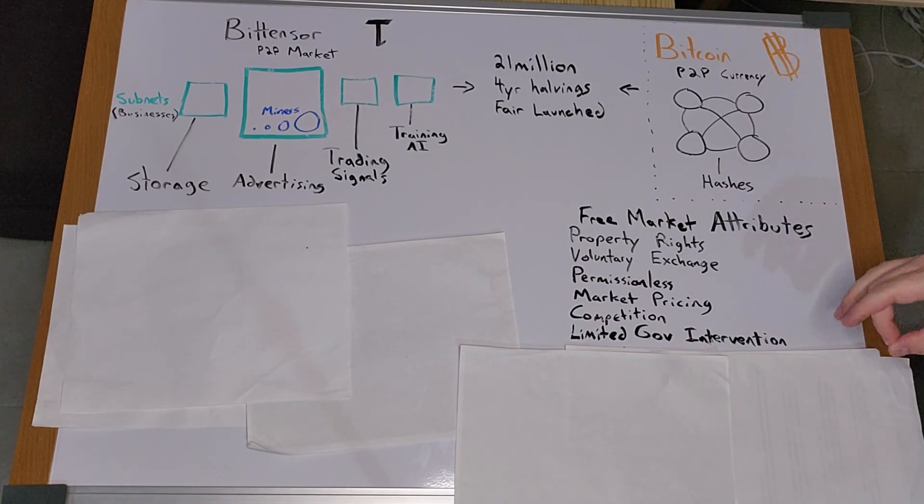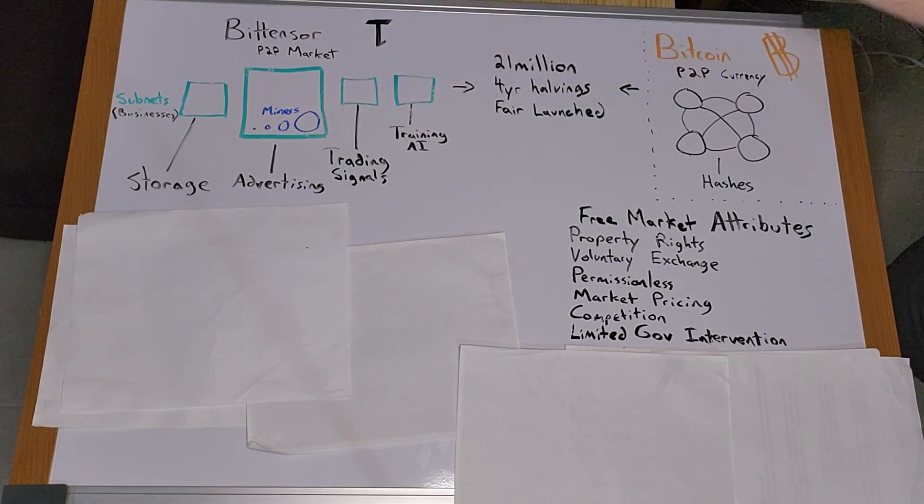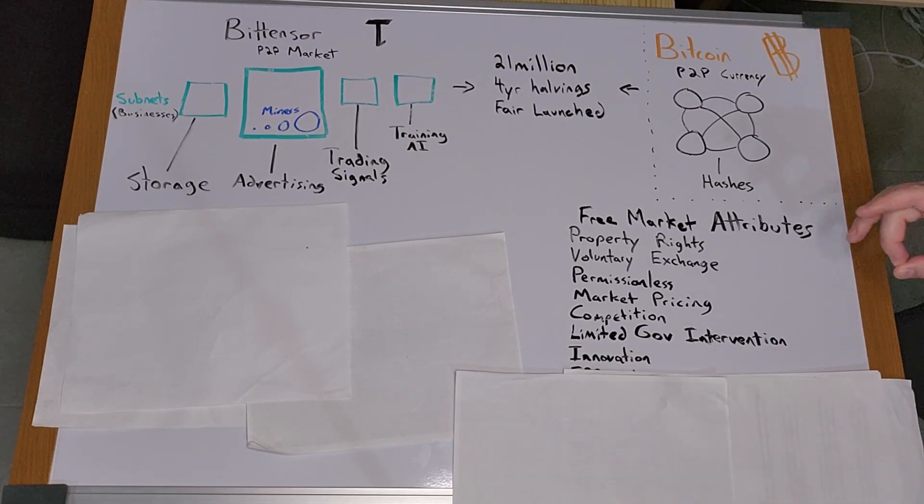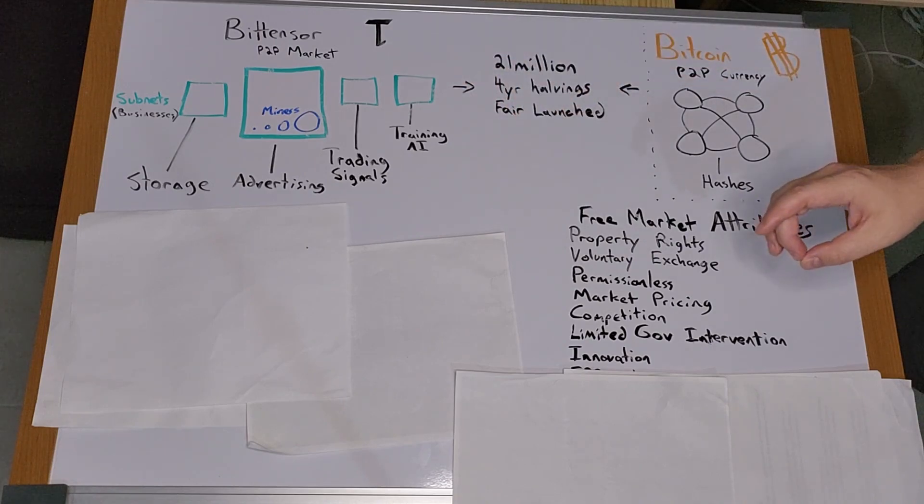Free markets have limited government intervention. Governments have no control over what BitTensor does in the same way that governments have no control over Bitcoin because they are decentralized. The market rewards innovation and entrepreneurship as individuals and businesses are motivated to create new subnets or make improvements to existing subnet miner code.